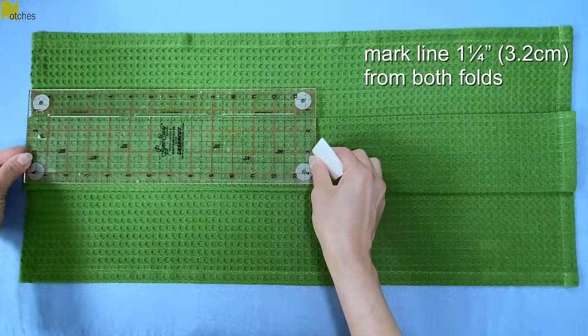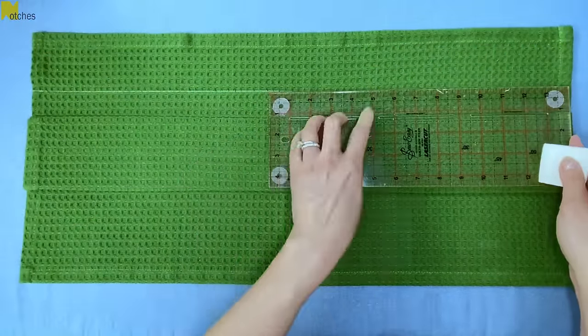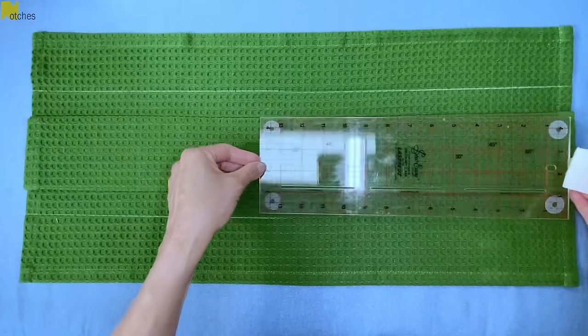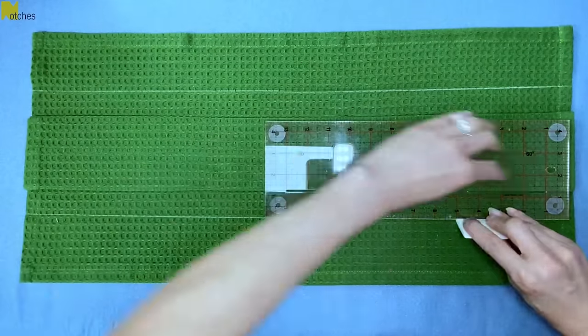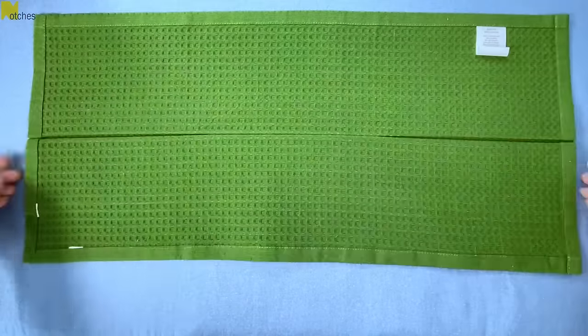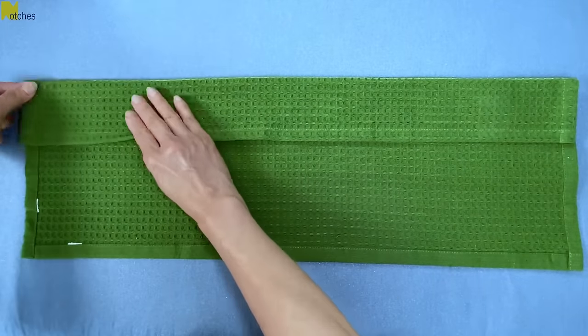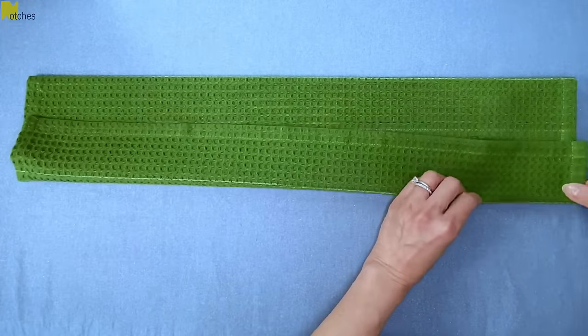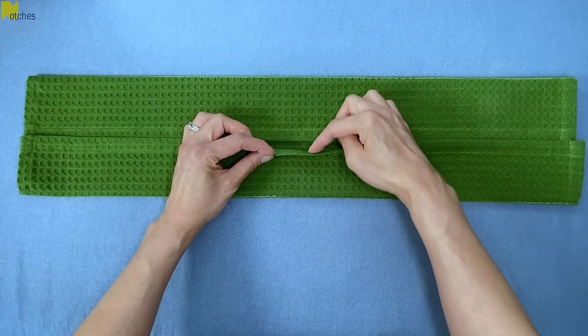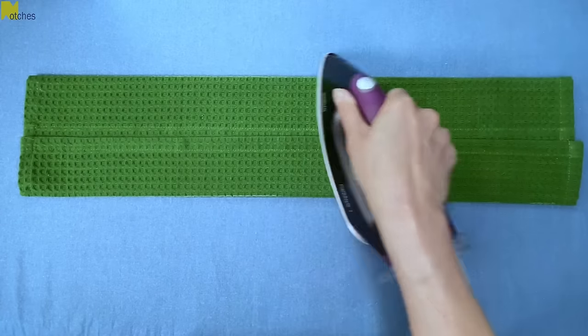Mark a line one and a quarter inches from each fold. Flip the towel over to the wrong side and then fold along those lines. You should be able to just see the lines. Depending on the width of your towel, the edges may or may not overlap. It really doesn't matter. Press along those folds.